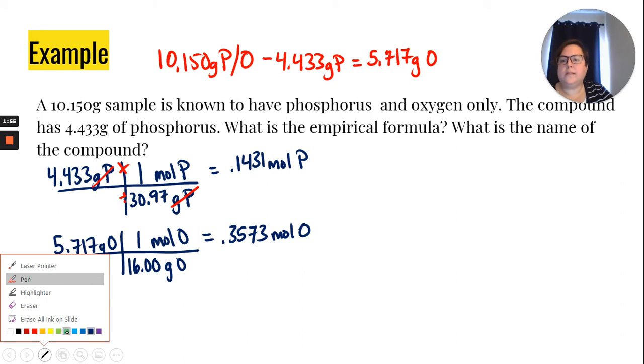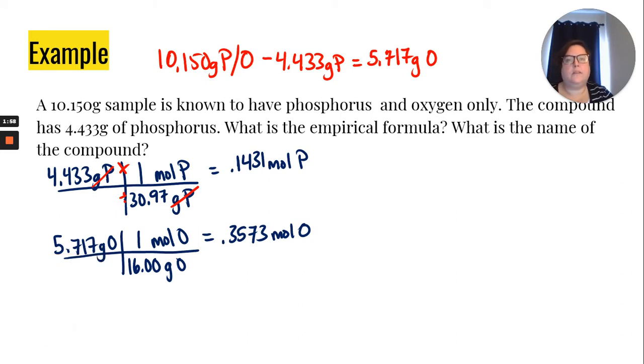Once you have your moles, then you divide by the smallest. And remember, this should always give you one of the elements being one, because you're coming up with a ratio. So phosphorus has our smaller amount of moles. So we're going to divide by that amount. And so we have one phosphorus.